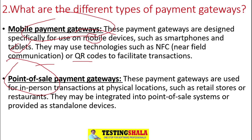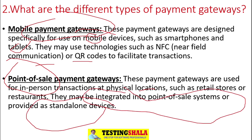The fifth type is point-of-sale payment gateways. We normally observe this type in shopping malls such as D-Mart or food stores, retail stores, or even restaurants. These locations adopt a different type of payment gateway called a point-of-sale system. By using these point-of-sale payment gateways, financial transactions are completed in-person. So these are the five types of payment gateways available.